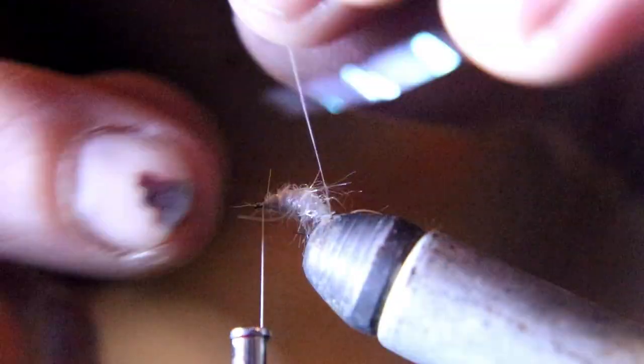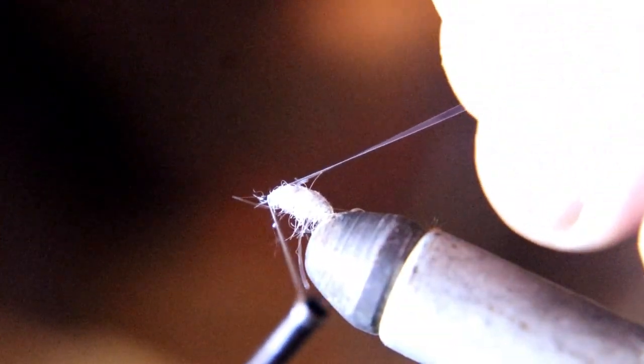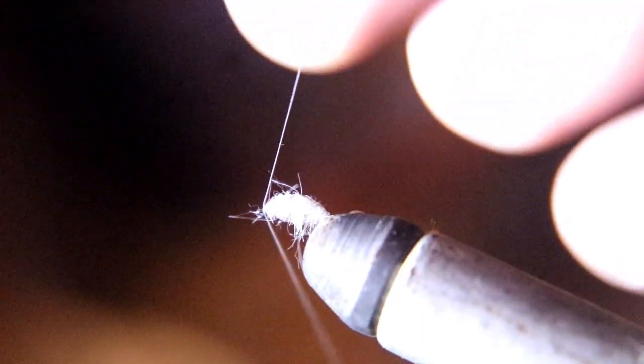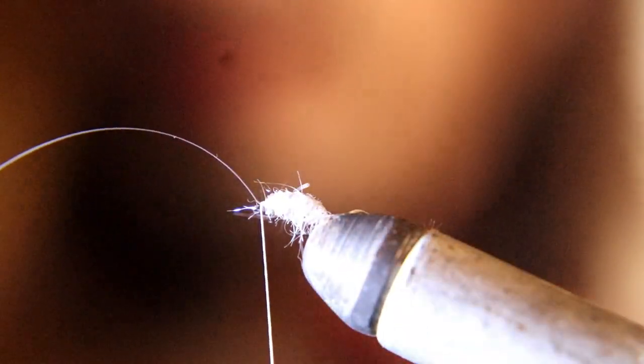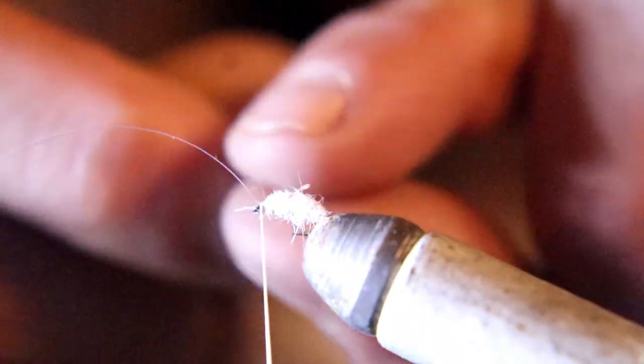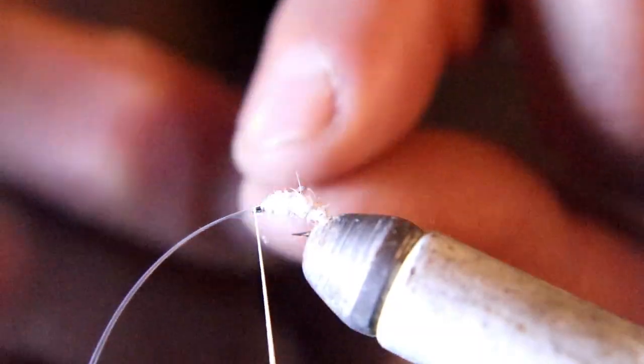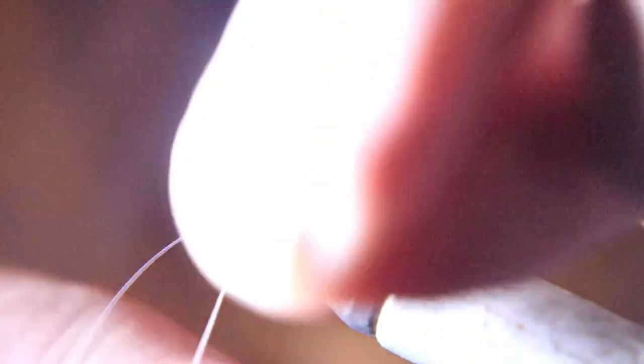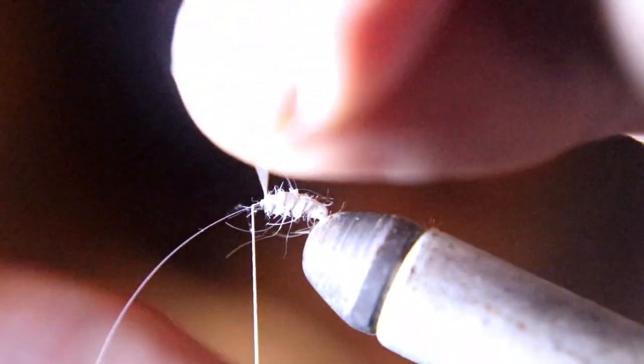Now you're going to pull that tinsel over, make sure it stays on top of the fly, and secure it right behind the eye of the hook. Now I like to put some thread wraps in and then pull back on that tinsel—that'll keep the eye from getting crowded. Now we're going to take that piece of thread and wrap it towards and rib this fly with it. As you rib this fly, make sure that tinsel stays on top of the fly.